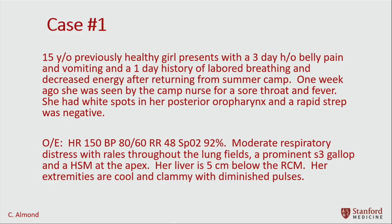On exam, she was tachycardic to 150. Her respirations were quick. She was in moderate respiratory distress with rales throughout the lung fields, a prominent S3 gallop — any question with an S3 gallop, it's automatically a heart failure question — and a holosystolic murmur at the apex. Her liver is 5 centimeters below the costal margin. Her extremities are cool and clammy with diminished pulses.